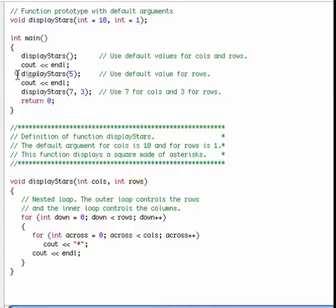If we go back to main, here's another call and it has one argument. So this 5 will be sent into columns. However, we're going to go ahead and use this 1, the default, into rows.